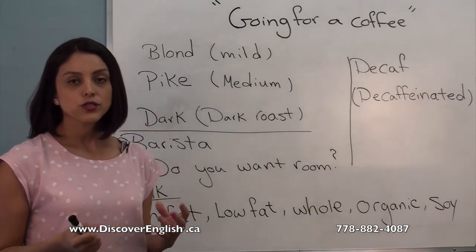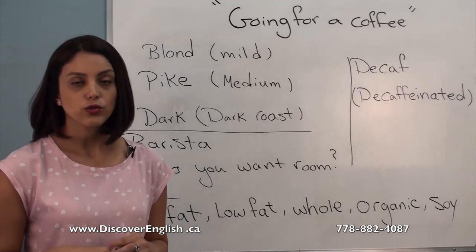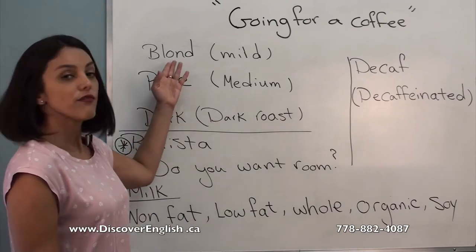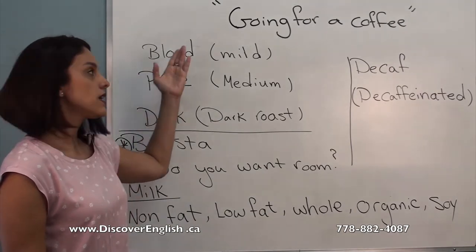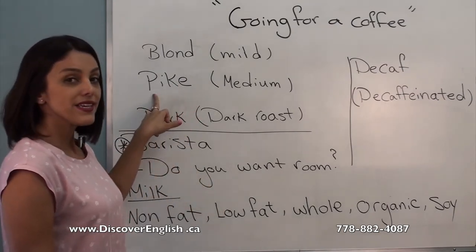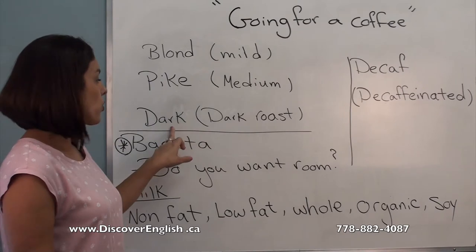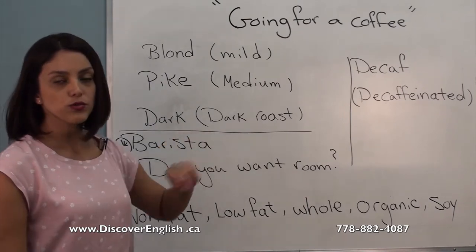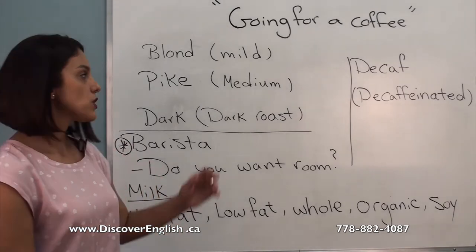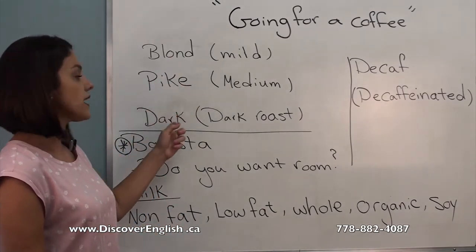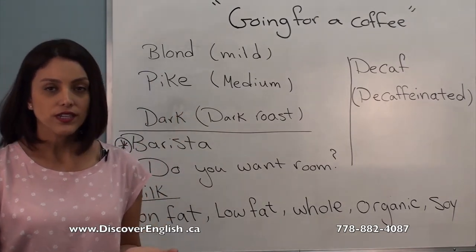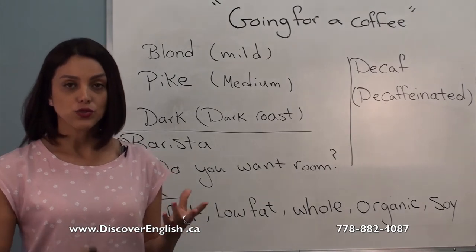If you want to order a regular coffee or drip coffee, there are different kinds. We have 'blonde,' which means mild or light roasted; 'pike,' which means medium roasted; and 'dark,' which means dark roasted. So at Starbucks for drip coffee you have blonde, pike, and dark. Blonde is my favorite because it's not that strong, but it really depends on you.